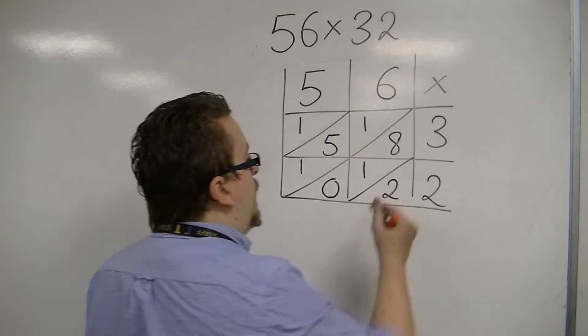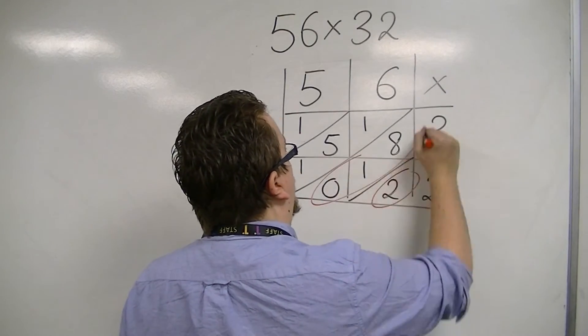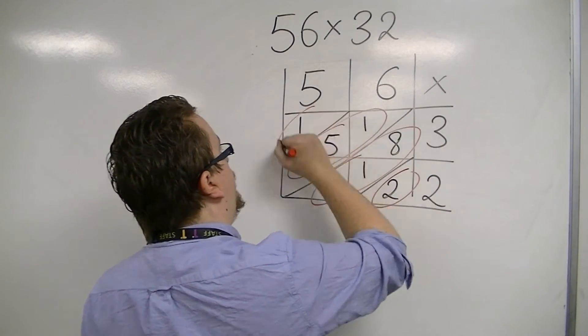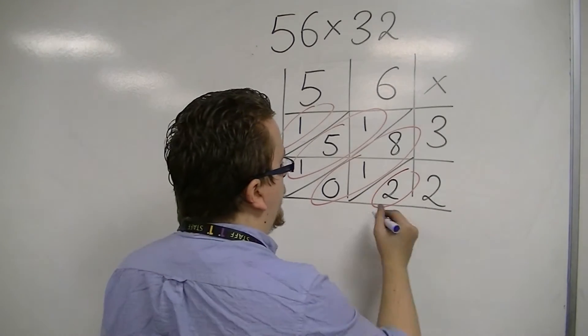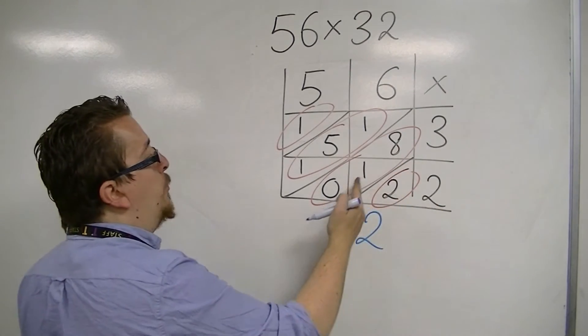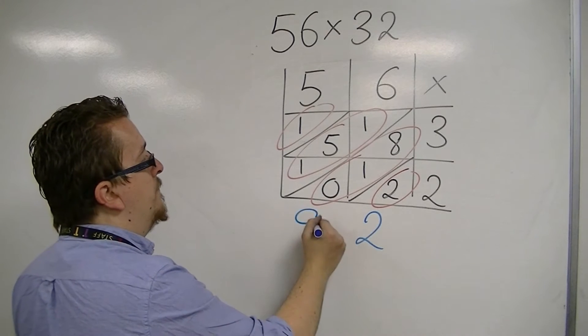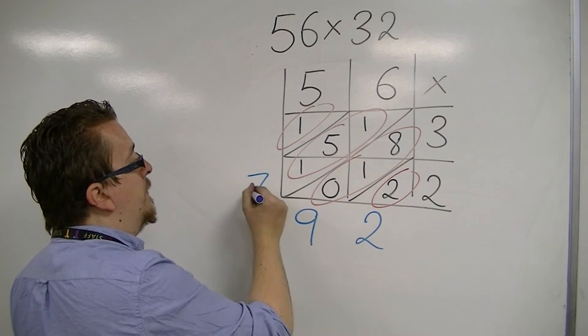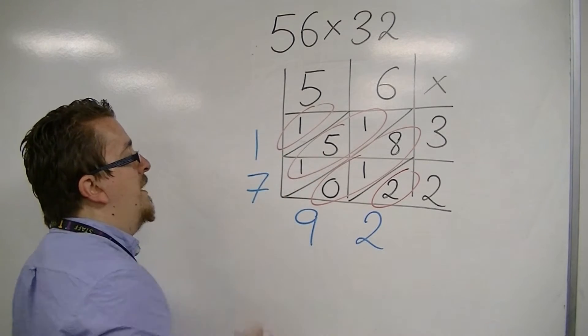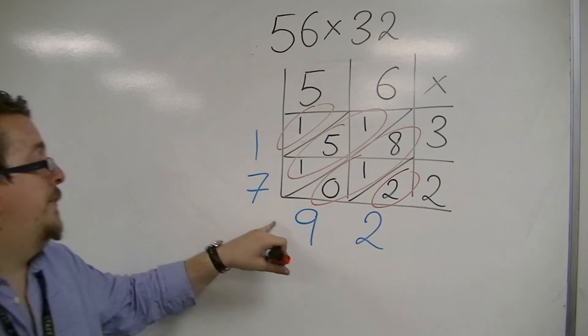We then add up the diagonals. So, we have 2. 8 plus 1 plus 0 is 9. 1 plus 5 plus 1 is 7. And we have that 1 left over. So, the answer is 1792.